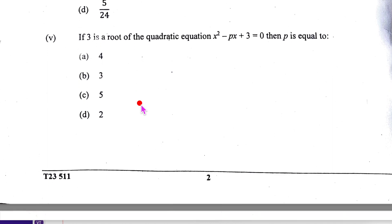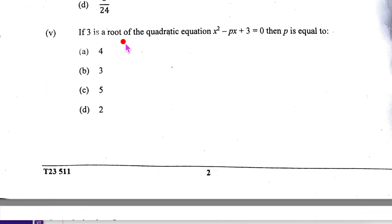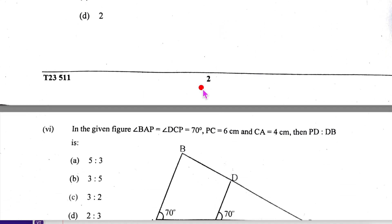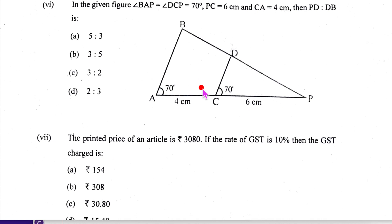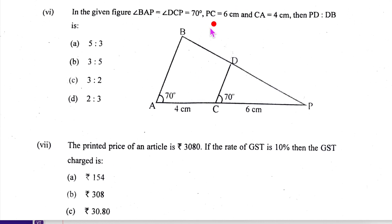3 is the root of this, then p is equal to - substitute x equal to 3 and solve this. Fine, so this is how you have to look at the paper during the reading time. Now here also see BAP, DCP - these are 70, 70, so these two triangles are similar and they have given the ratio. Fine, these ones: 6 is to 10, so that will be 3 is to 5. So we know the ratio, their mental work.